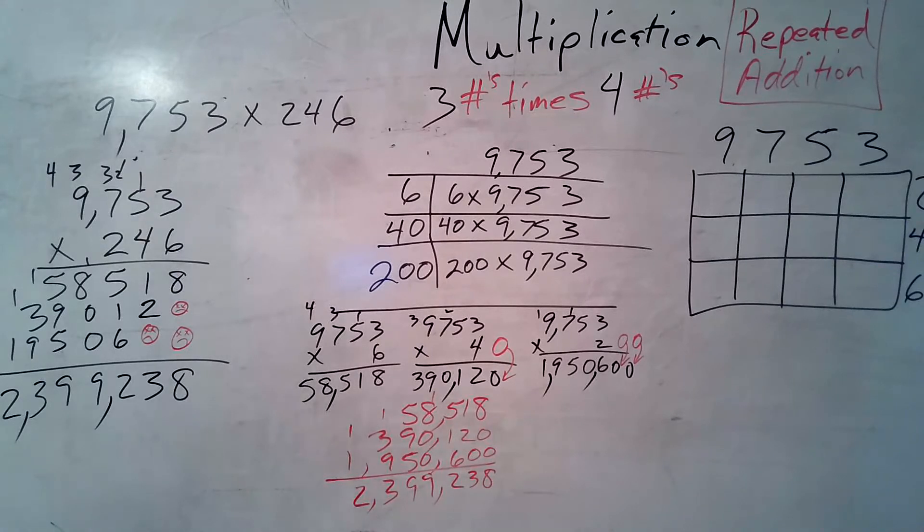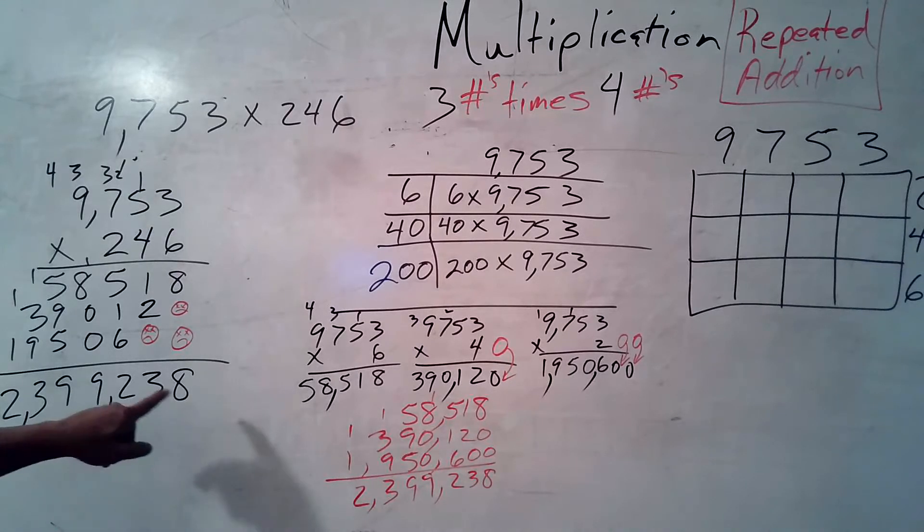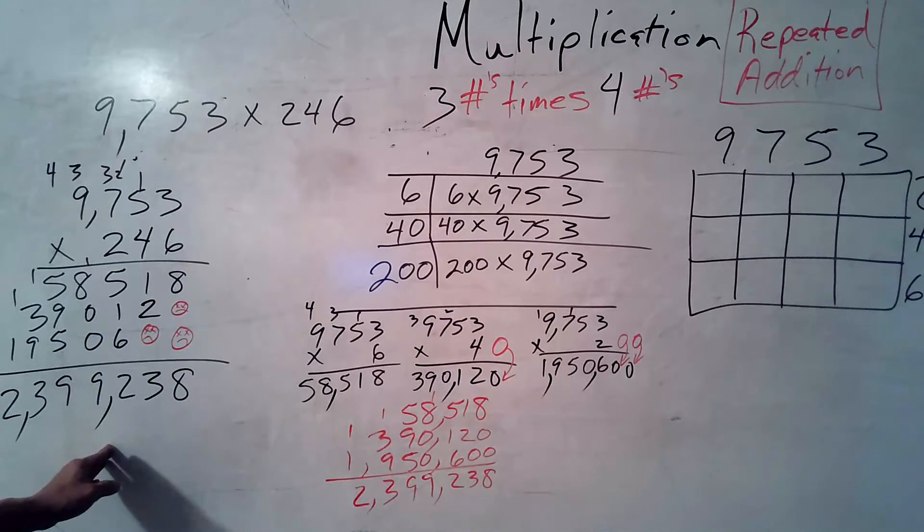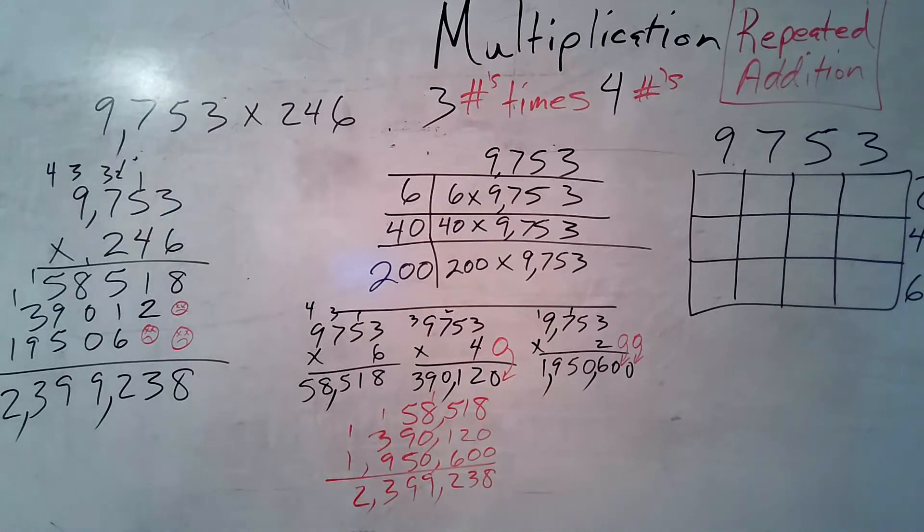Did I do it with a calculator? No, I did not. So, I get 1, 2, 3, comma, 1, 2, 3, comma. Hey, this comma we've always said says thousand. But this comma over here says million. So, 2,399,238. That's old school. Mom and dad, there it is. In your face. Good luck.